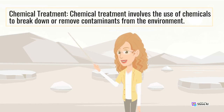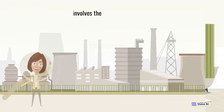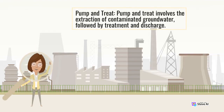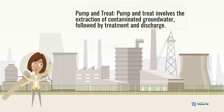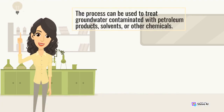Chemical Treatment involves the use of chemicals to break down or remove contaminants from the environment. Chemical treatment can be used to treat soil, water, or air. Pump and Treat involves the extraction of contaminated groundwater, followed by treatment and discharge. The process can be used to treat groundwater contaminated with petroleum products, solvents, or other chemicals.